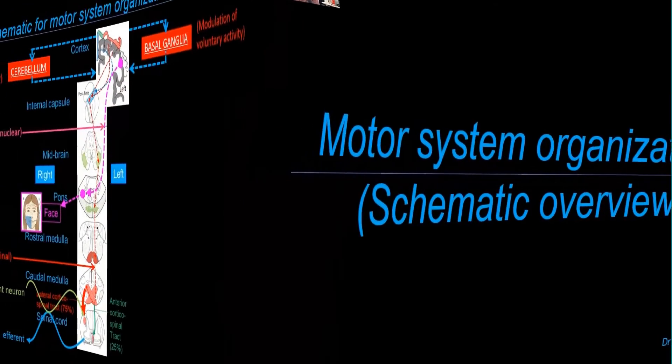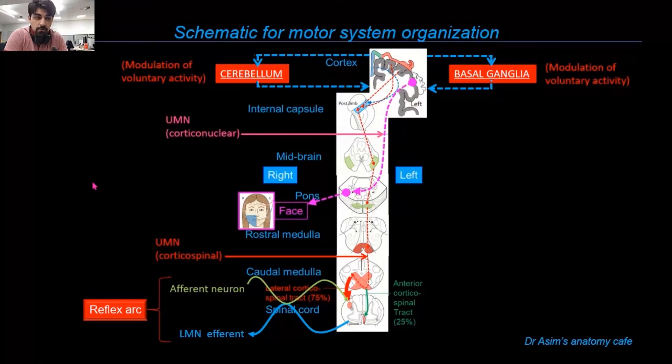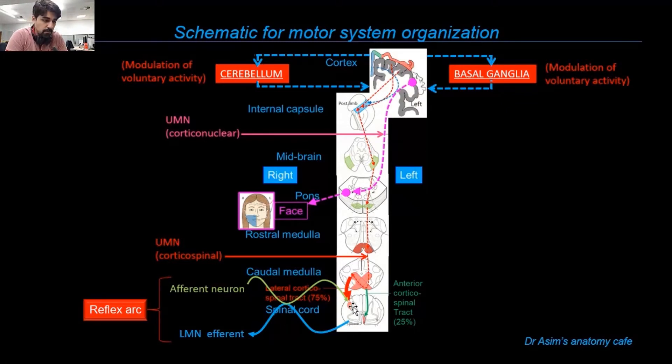Before we begin, let me show you a schematic which gives a nice overview of the various components of the motor system and their organization as a whole. Here in the center you can see different horizontal slices taken at various levels in the central nervous system. Remember, the central nervous system relates to the brain and the spinal cord.